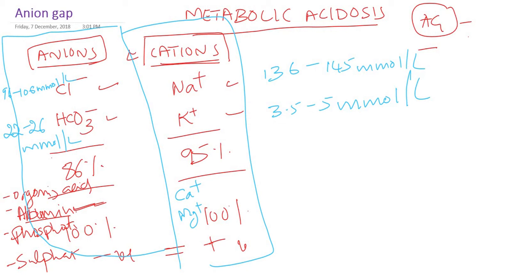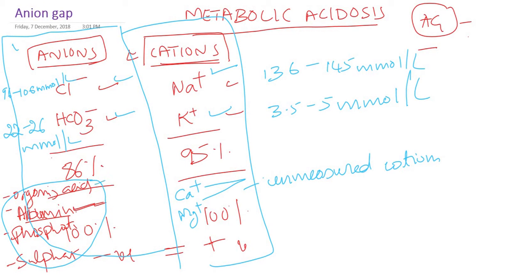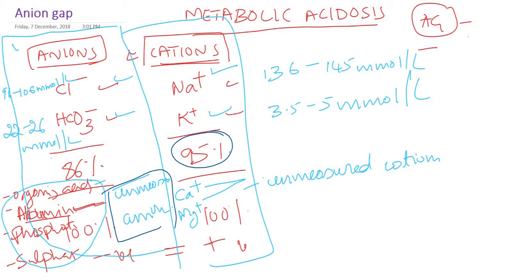In the ABG analyzer, routinely we measure sodium, potassium, chloride and bicarbonate. So everything else becomes unmeasured — unmeasured cations and unmeasured anions. Ketogenic acids and similar substances all become unmeasured anions. The difference between unmeasured cations and unmeasured anions is actually the anion gap.